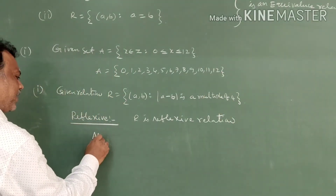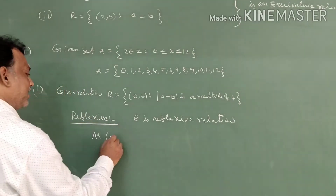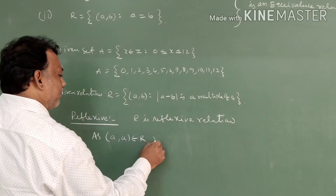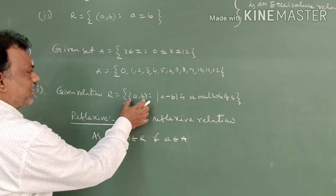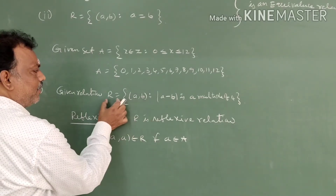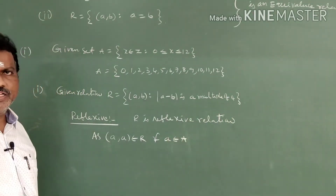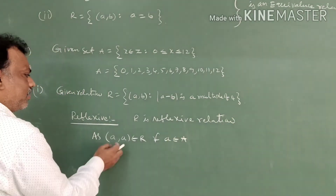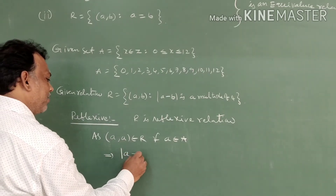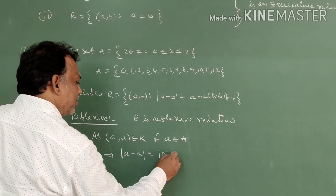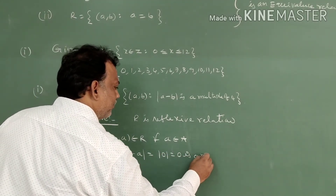You have to give the definition, not just an example. The definition: (a,a) belongs to R for all a belonging to A. According to the given relation, for any pair the absolute difference must be a multiple of 4. For the pair (0,0): mod of 0 minus 0 equals mod of 0, which is 0, and 0 is a multiple of 4. True.